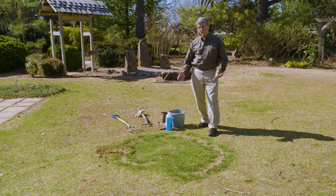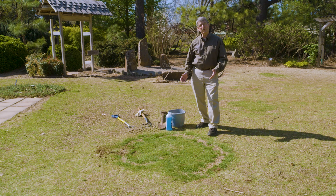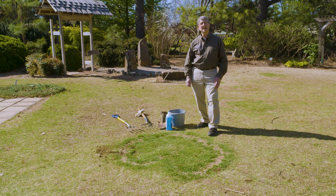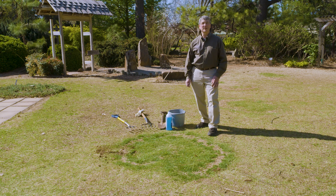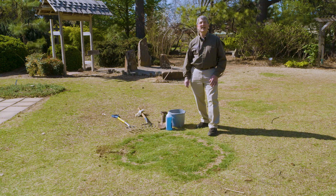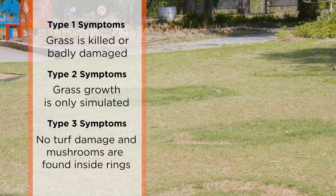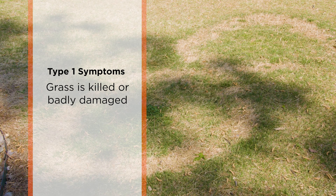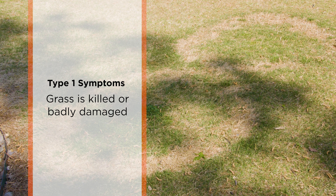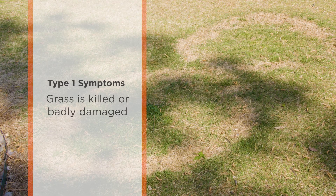Fairy ring is a symptom, and you'll see in this segment that we have dark green turf and we sometimes have a dead ring or a series of arcs within that ring. This is caused by a fungus called the fairy ring fungus — that's the actual common name. There are three symptoms exhibited by fairy ring. Right now we have a Type 1 symptom, where you'll see greening of turf but you'll also see tan-brown dead turf.